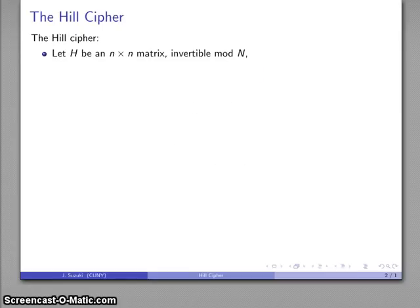So what I'm going to do is pick some n by n matrix that's invertible mod N. So the determinant has to be something that is relatively prime to N, otherwise I won't be able to find the inverse.